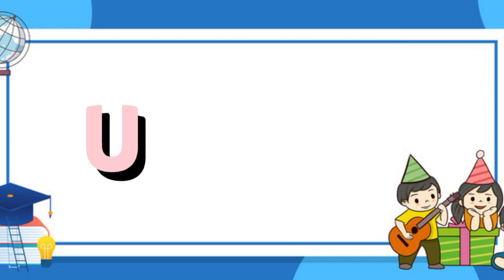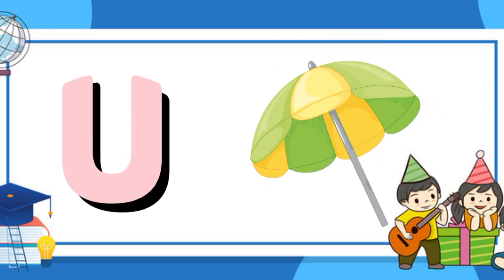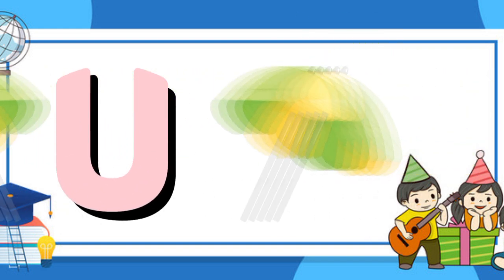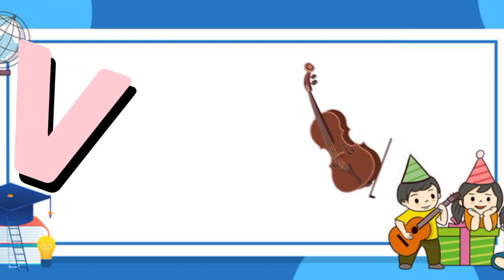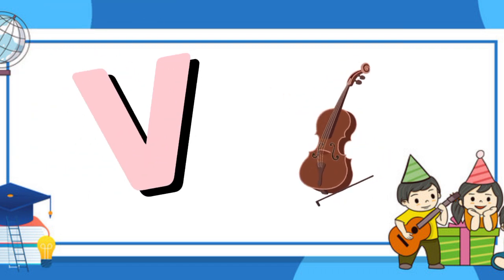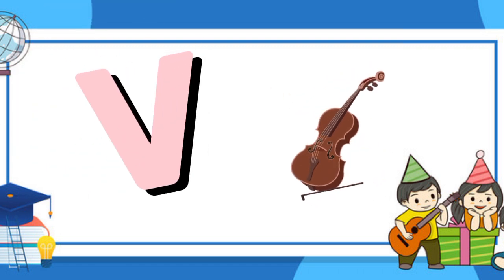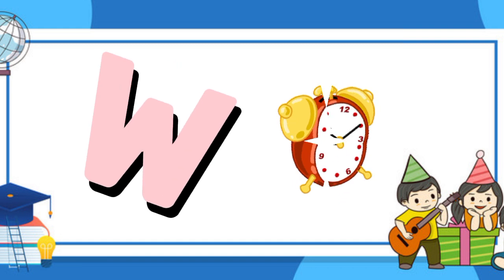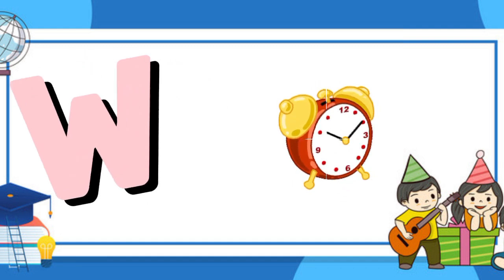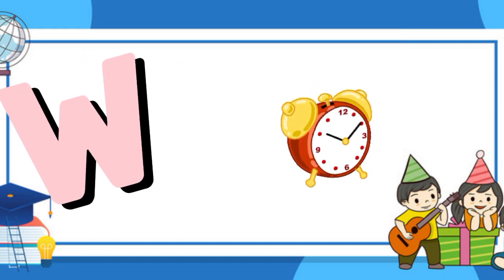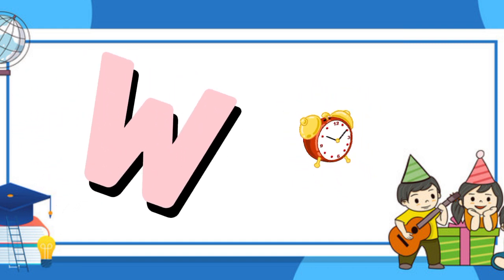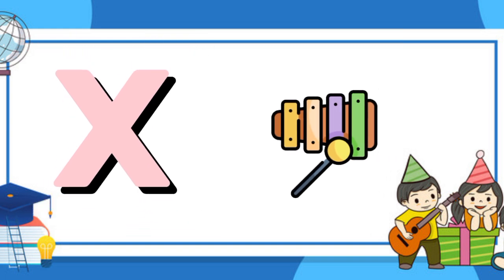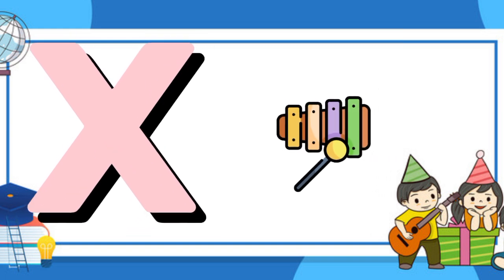U is for umbrella, u-u-u-umbrella. V is for violin, v-v-violin. W is for watch, w-w-watch. X is for xylophone, x-x-xylophone.